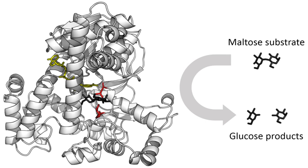Examples of post-translational modification include phosphorylation, myristoylation and glycosylation. For example, in the response to insulin, the phosphorylation of multiple enzymes including glycogen synthase helps control the synthesis or degradation of glycogen and allows the cell to respond to changes in blood sugar. Another example of post-translational modification is the cleavage of the polypeptide chain. Chymotrypsin, a digestive protease, is produced in inactive form as chymotrypsinogen in the pancreas and transported in this form to the stomach where it is activated. This stops the enzyme from digesting the pancreas or other tissues before it enters the gut. This type of inactive precursor to an enzyme is known as a zymogen or proenzyme.